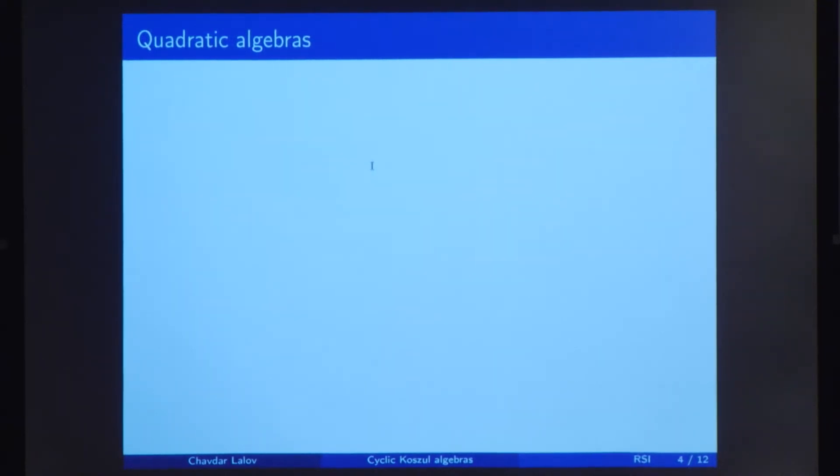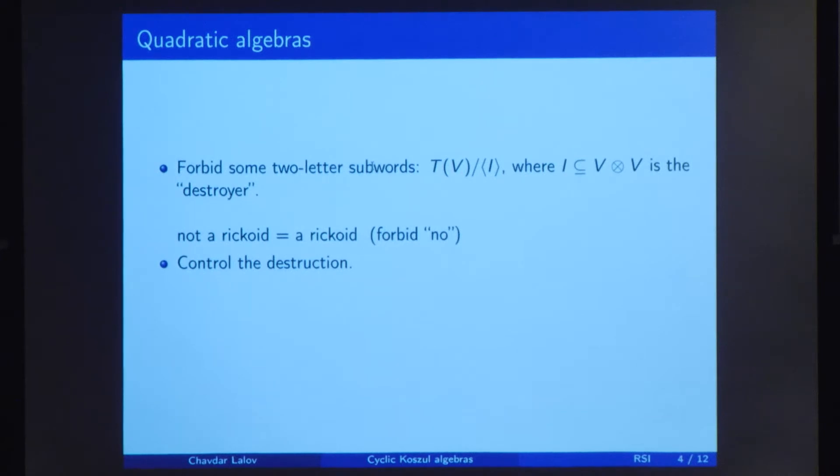In order to define the object we study in our project, we're going to start destroying our language. What we'll do is that we're going to forbid certain two-letter subwords. What I mean by that is that, for example, if we forbid the word no, since it is contained in not, it will go to zero and not a rickoid will become a rickoid. Now in more mathematical terms, if we take the tensor algebra of V and we take the quotient by an ideal generated by a subspace I in V tensor V, then we get the destroyed language. What mathematicians are interested in is controlling this destruction with respect to Hilbert series.